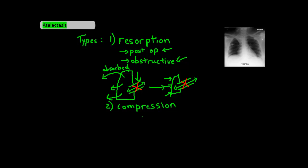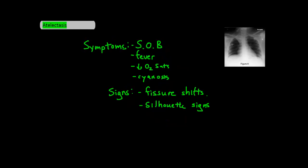Compressive atelectasis is intuitive enough. This means that something such as blood, fluid, or a diaphragmatic hernia compresses a lung lobe to the point that it pushes air out of the lung, and the lobe collapses. Now that we're done with that, let's talk about what this looks like.